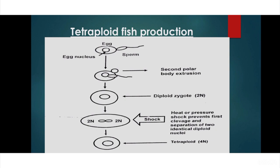We use triploid or tetraploid organisms for different kinds of research work, for food production, to decrease the pressure of inbreeding and hybridization on local populations, and also for gene conservation.